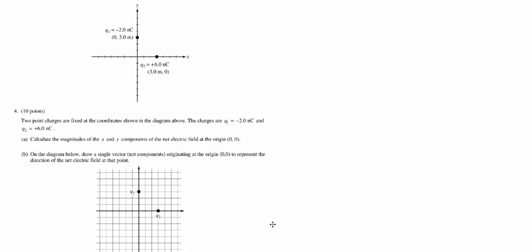We're looking at the 2014 AP Physics B exam, question number 4. It's primarily an electrostatics problem. We've got two point charges fixed at the coordinates shown above - one is 6 nanocoulombs positive, the other is negative 2 nanocoulombs. We want to know the magnitude of the x and y components of the net electric field at the origin.